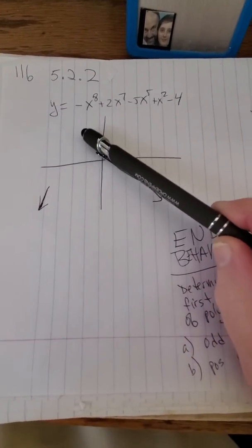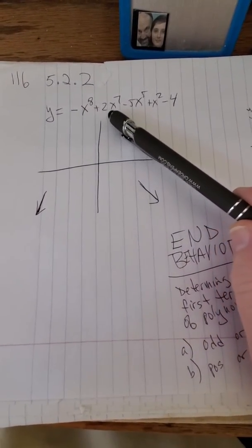Now, if you have a function like this, a polynomial, y equals negative x to the eighth plus two, blah blah blah.